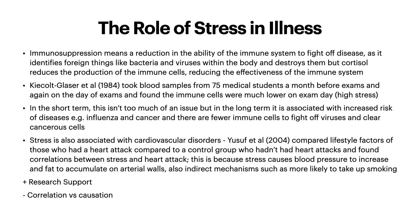Then we have the role of stress in illness. Immunosuppression means a reduction in the ability of the immune system to fight off disease, as it identifies foreign things like bacteria and viruses within the body and destroys them. Cortisol reduces the production of immune cells, reducing the effectiveness of the immune system. Kiecolt-Glaser et al. in 1984 took blood samples from 75 medical students a month before their exams and again on the day of exams, and found immune cells were much lower on exam day where there was high stress. In the long term this is associated with increased risk of diseases such as influenza and cancer, as there are fewer immune cells to fight off viruses and clear cancerous cells.